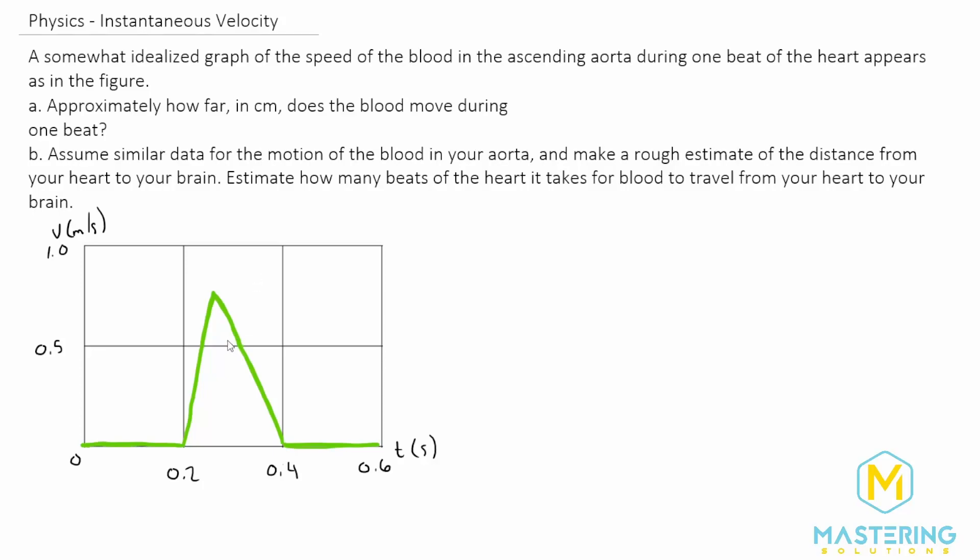Welcome to Mastering Solutions. In this problem they give us a velocity versus time graph as the blood is going through the ascending aorta, and they want us to know in part A how far in centimeters it moves during one beat.